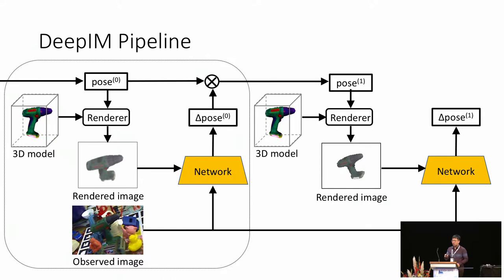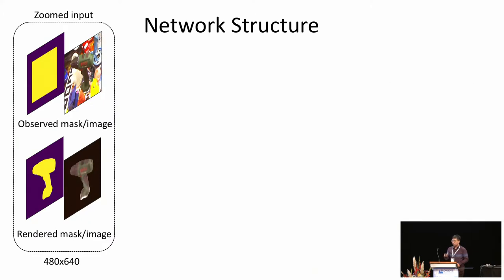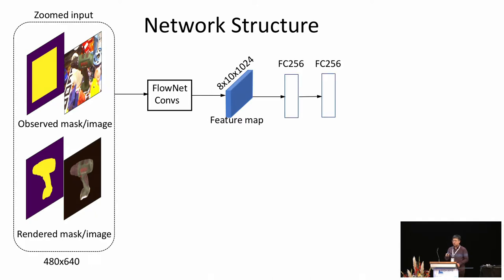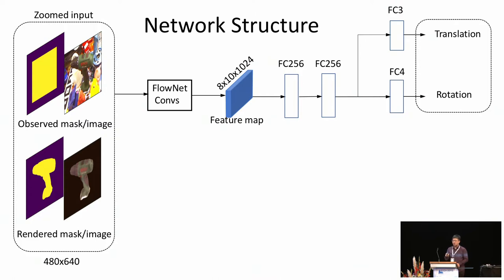Next, I will provide more details on the structure of the matching network. The network takes four images as input: the observed image and an initial object bounding box mask along with the rendered image and the mask. We choose FlowNet Simple as the network's backbone structure. After 11 conv layers from FlowNet Simple, we continue with two fully connected layers and two regressors to predict the translation and rotation. We also add additional branches to predict the optical flow and object masks during training.